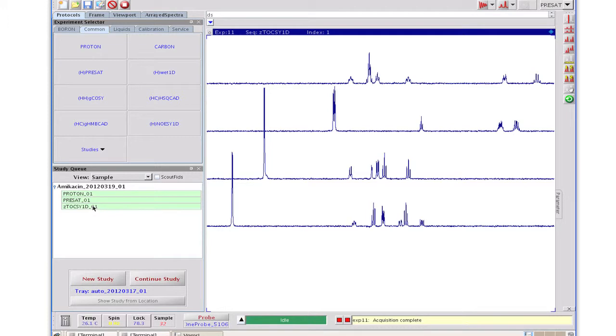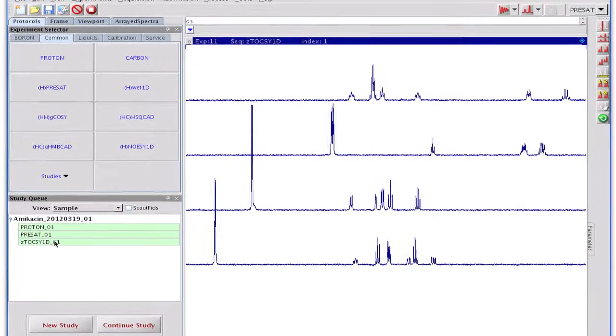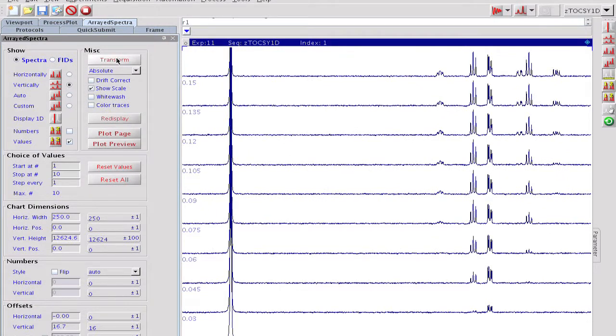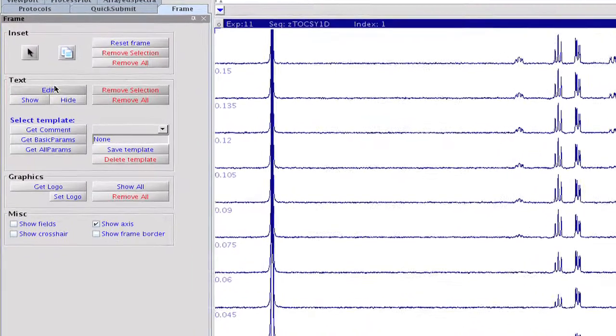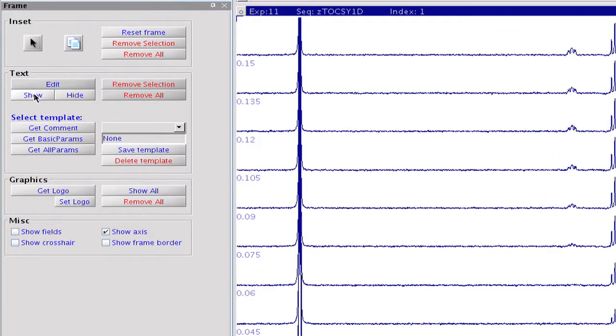We load this FID into the workspace and take a quick look at the results. As the mixing time increases, the magnetization relays further and further in the sugar ring. The order of signal appearance allows us to make unambiguous signal assignment within this ring.